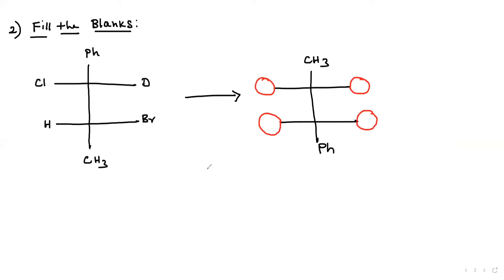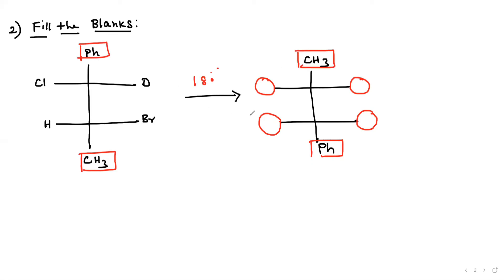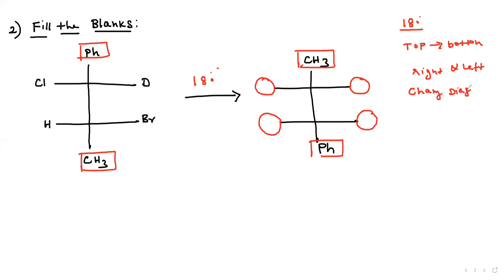The second question asks you to fill in the blank. They give you one Fischer projection and another Fischer projection. What is the difference between the molecules? The pH group is on the top layer versus the bottom layer, and CH3 is on the bottom versus top layer — they do a 180° rotation. What happens with a 180° rotation? The top converts to bottom and vice versa, and right and left change diagonally.